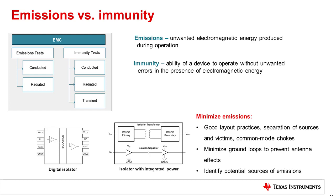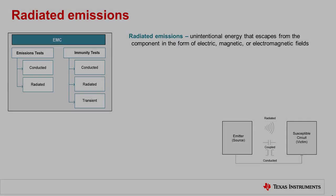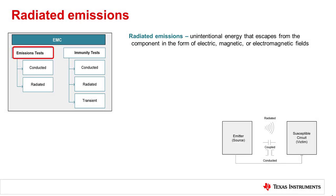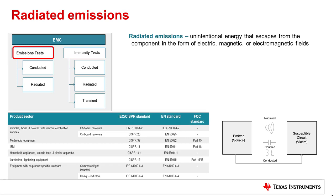EMC measurement for emissions includes both conducted and radiated tests. Radiated emissions describes the unintentional energy that escapes from the component or system in the form of electric, magnetic, or electromagnetic fields.